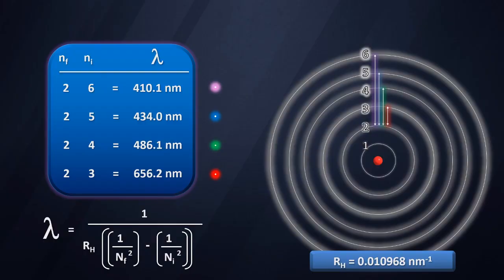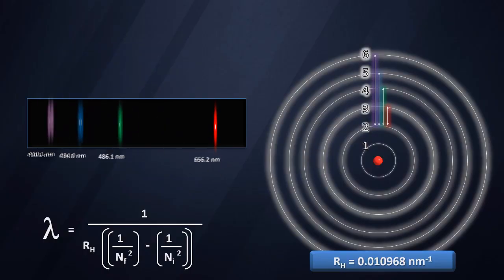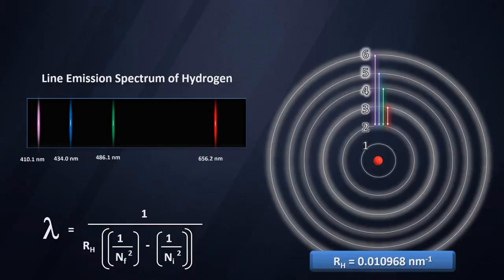And for certain transitions, these photons correspond to the visible portion of the electromagnetic spectrum.